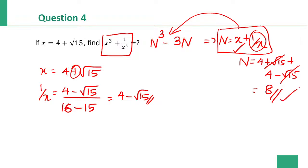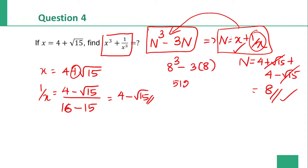So n value is equal to 8. Substituting into n cube minus 3n: 8 cube minus 3 into 8. 8 cube is 512. 3 into 8 is 24. So 512 minus 24, the answer is 488 is the right answer.